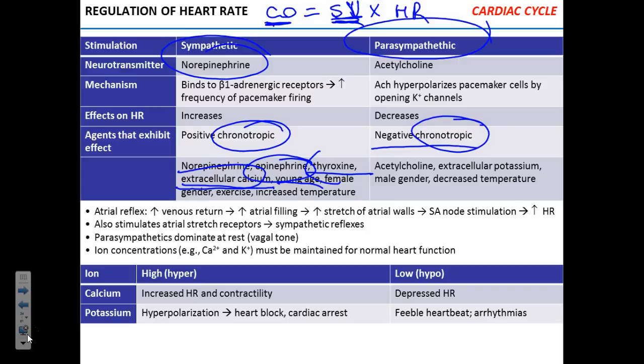Negative chronotropic agents: potassium, acetylcholine, and being male all contribute to a lower heart rate — which isn't bad per se. Another way to regulate heart rate is the so-called atrial reflex.